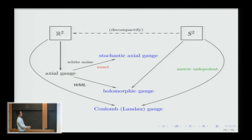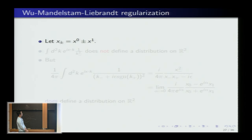I really want to get to S², because on S² you don't have a global axial gauge. That's where holomorphic gauge comes in — a different regularization of axial gauge using the Wu-Mandelstam-Leibbrandt prescription, which is quite interesting.